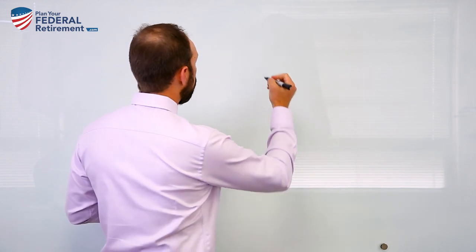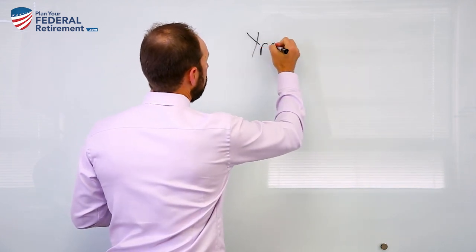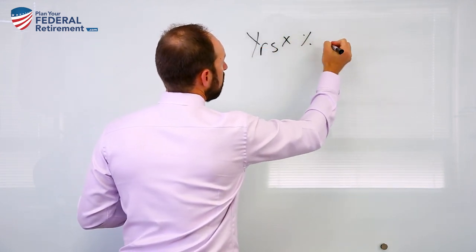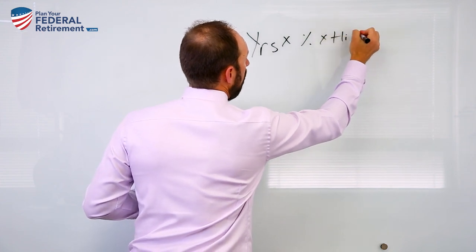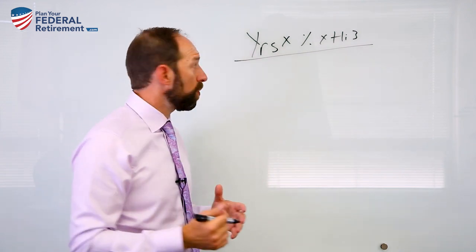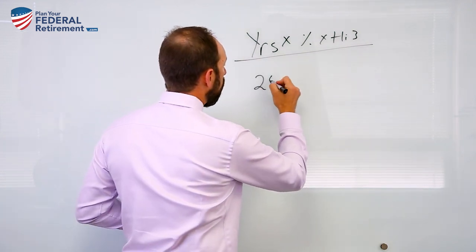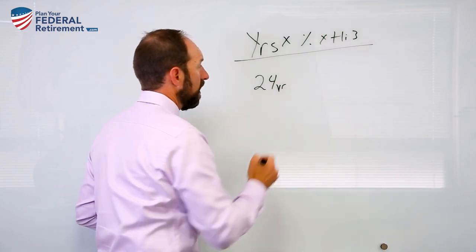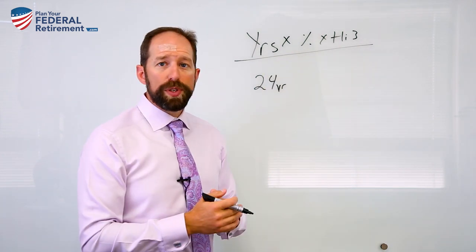In order to calculate your FERS retirement, you're going to take your years of service times a percent times your high three. Your high three is your highest 36 consecutive months of service. This is how the pension works. So years of service, we have 24 years of service in this case, and we've got to times it by a percent.